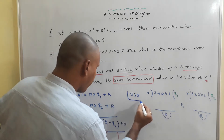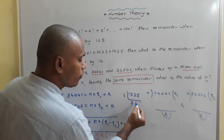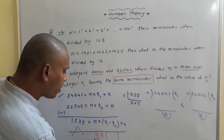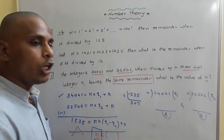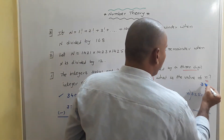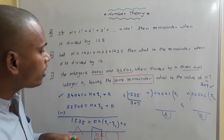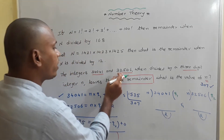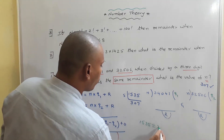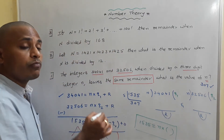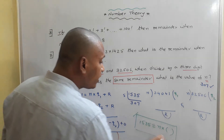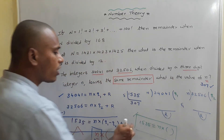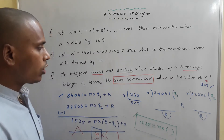So 1,535: 5 threes is 15 and 5 sevens is 35 — that gives 5 × 307. So it is easy to write 1,535 as 307 × 5. The three-digit integer value of n is 307. Our answer for this problem is 307.